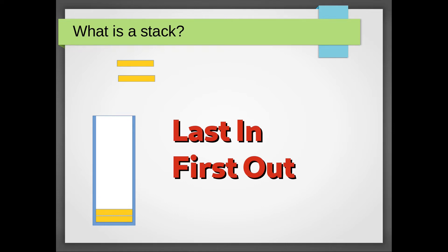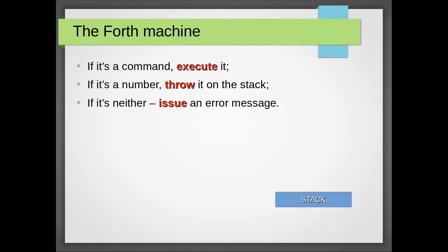Now imagine a stack with numbers and a computer language that lives by consistently applying three simple rules. If it's a command, execute it. If it's a number, throw it on the stack. If it's neither, issue an error message.